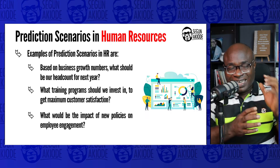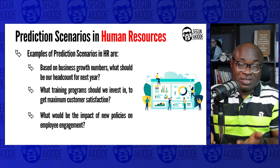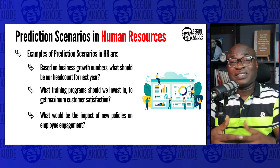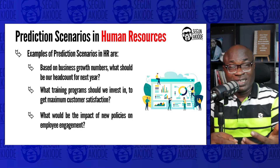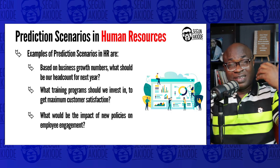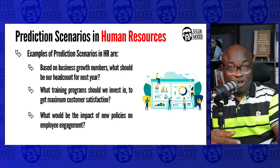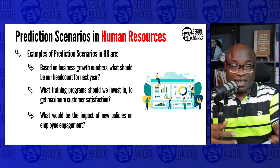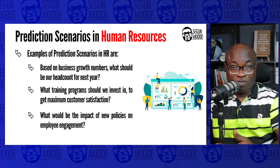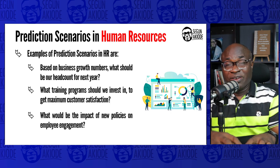Also, what would be the impact of new policies on employee engagement? Employee engagement is critical to HR because from engagement surveys, you can determine the employee satisfaction index. If there's a change of policy, there will be a corresponding effect on employee engagement. You collect survey data and make a prediction — for example, if we increase salaries next year, will that affect employee engagement? These are all examples of prediction scenarios in HR.